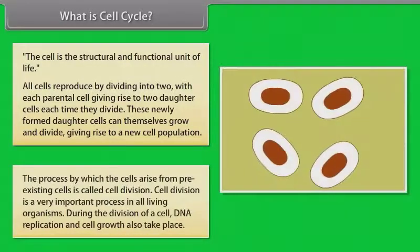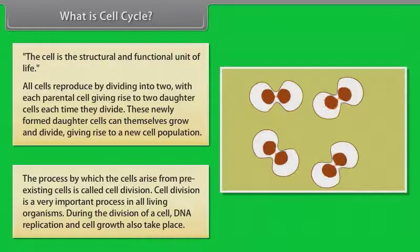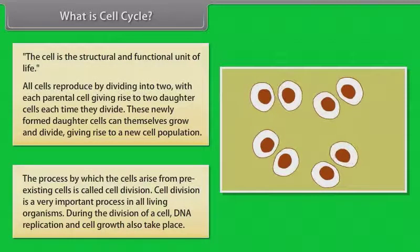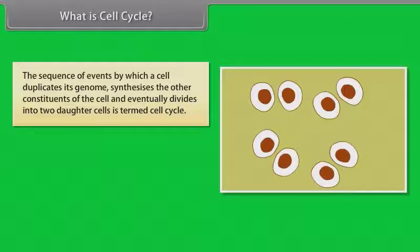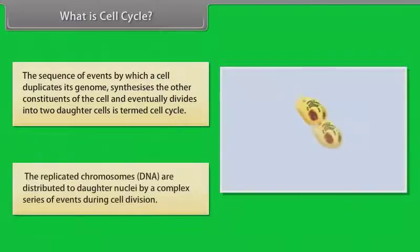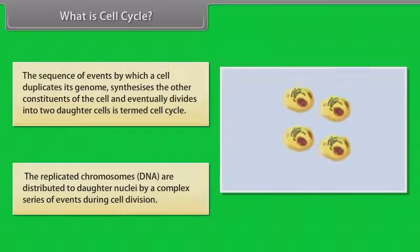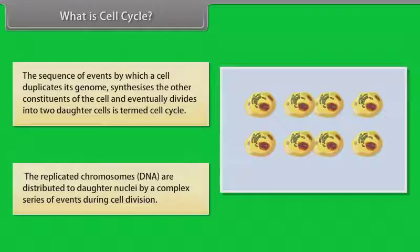The process by which cells arise from pre-existing cells is called cell division. It is a very important process found in all living organisms. During the division of a cell, DNA replication and cell growth also take place. The sequence of events by which a cell duplicates its genome, synthesizes the other constituents of the cell, and eventually divides into new daughter cells is termed as cell cycle.